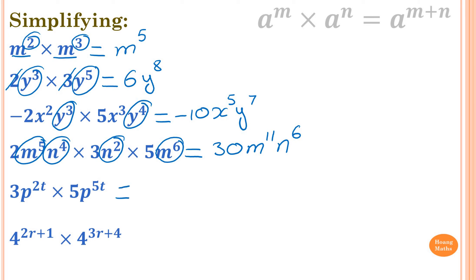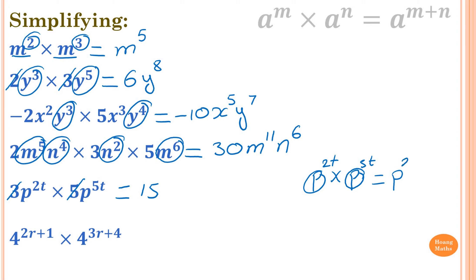Second last one: 3 times 5 is 15. Now p to the power of 2t times p to the power of 5t — both are the same base, so we just add the indices: 2t plus 5t is 7t. So p to the power of 7t. The answer is 15p to the power of 7t.